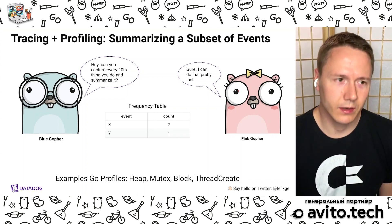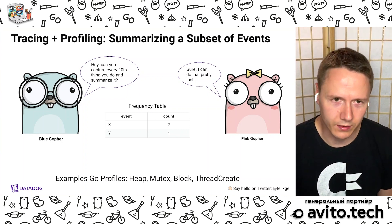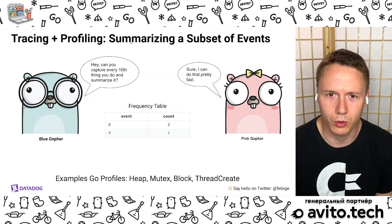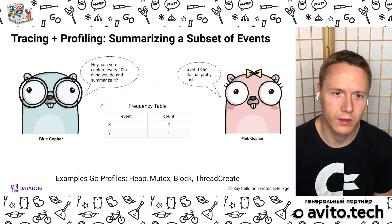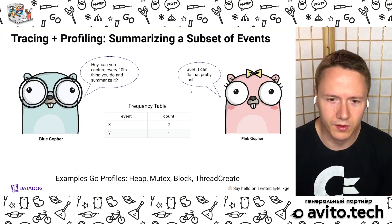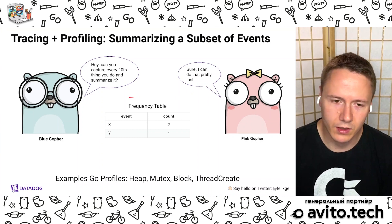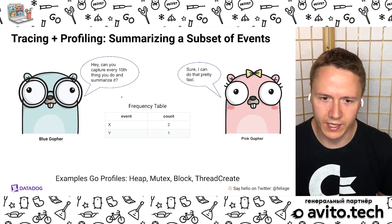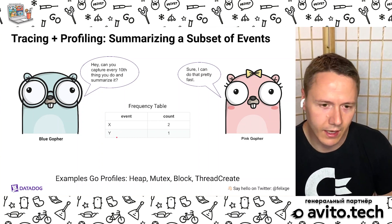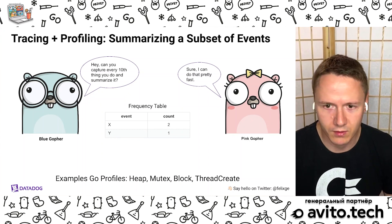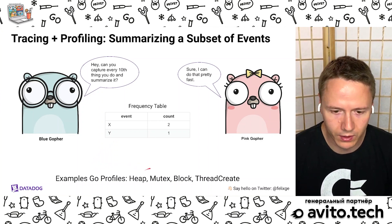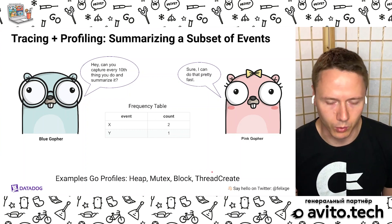Now we're ready to talk about tracing and profiling combined — a hybrid approach of sampling a subset of events. The blue gopher says: can you capture every tenth thing you do and summarize it? The pink gopher says: sure, I can do this pretty fast. So the pink gopher still has to look at a lot of events, but only picks one out of ten to increment in the frequency table — it doesn't have to keep a timestamp and individual record for every event, making it much less overhead. Quite a few profilers in Go work like that: the heap profiler, the mutex profiler, the block profiler, and the thread create profiler.